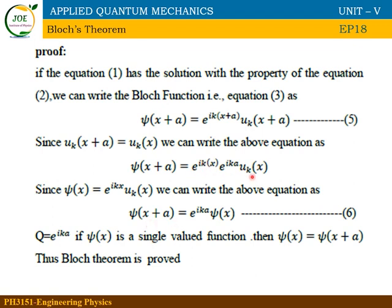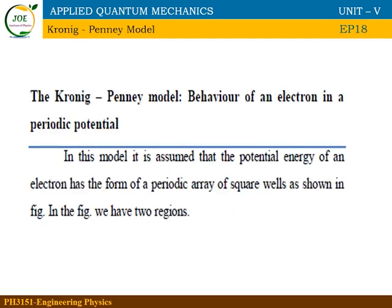This is equation number 6. Substituting, ψ(x + a) = e^(ika) · [e^(ikx) · u_k(x)] = e^(ika) · ψ(x). Therefore ψ(x + a) = e^(ika) · ψ(x), showing the Bloch wave function has periodicity. This completes Bloch's theorem. The next topic is the Kronig-Penney Model.